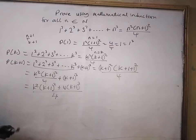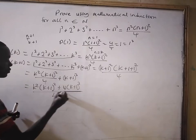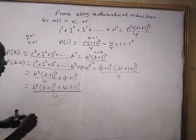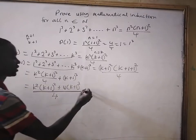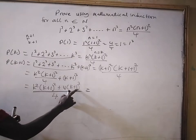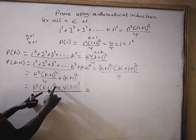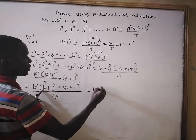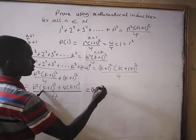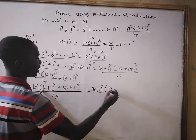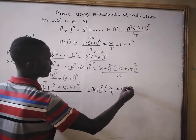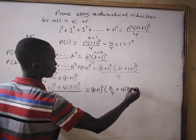Always look for common factors and factorize. So now we have k squared times (k+1) all squared plus 4 times (k+1)³, all divided by 4. Now we can factorize (k+1) squared out.